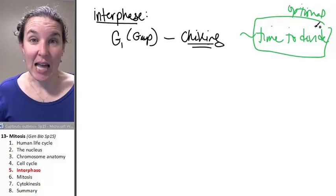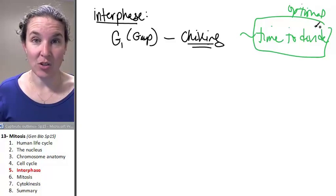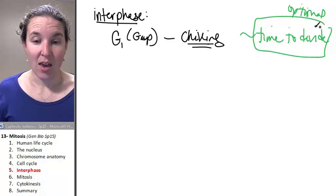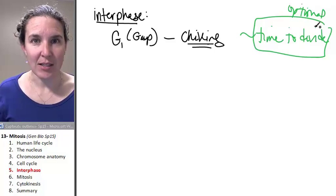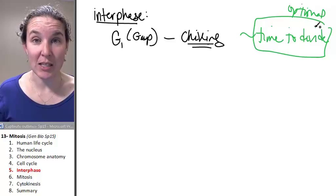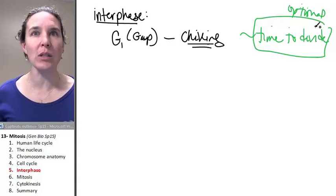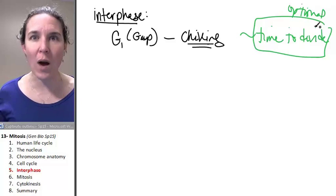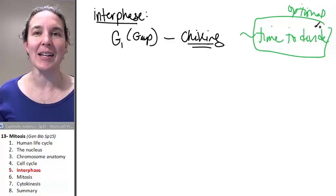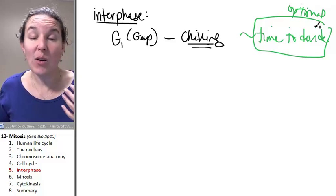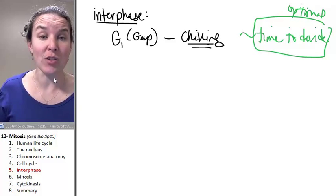The cells lining your intestinal tract go through mitosis. They divide and replace themselves every 12 days. Every 12 days, you have a whole new lining of your digestive tract. What? That's crazy. That's really, really, really fast mitosis.